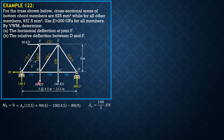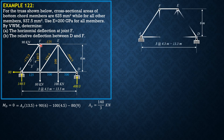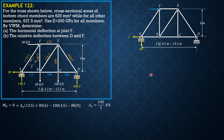For Part A, we apply a unit rightward virtual load at F. The horizontal reaction at A is also 1. The vertical reaction is downward, equal to 1 times 6 divided by 13.5, which is 4 over 9 downward. Summation of forces Y upward at D is 4 over 9 for equilibrium.